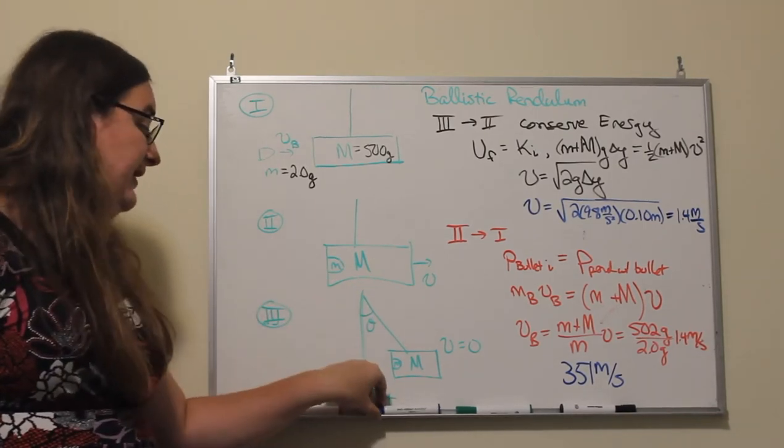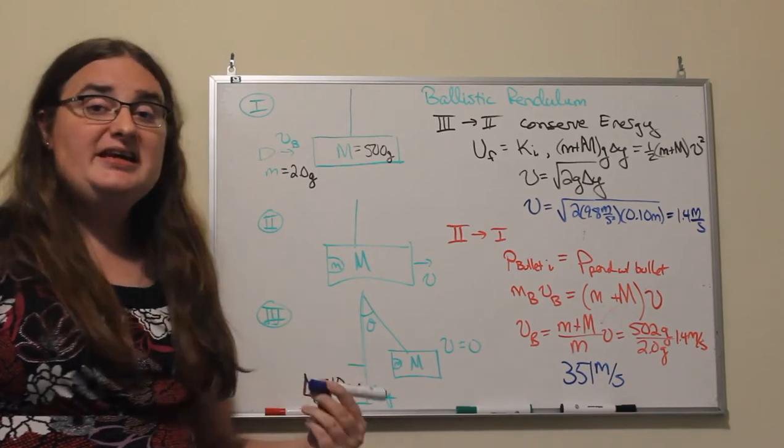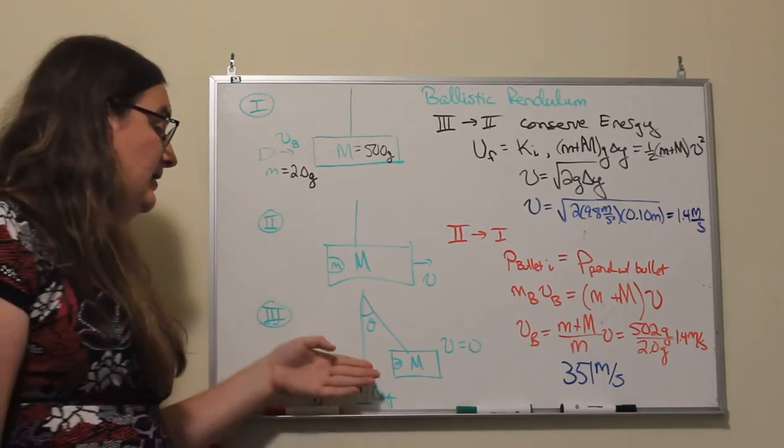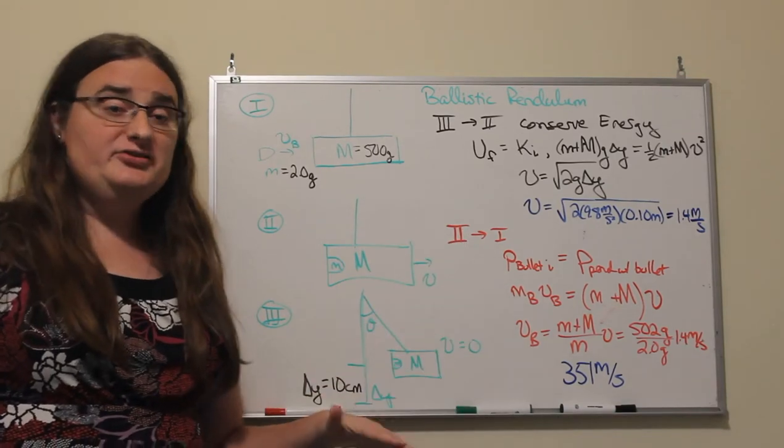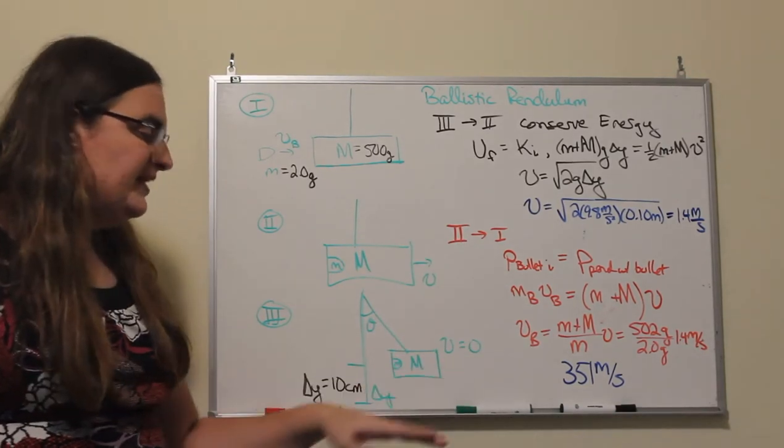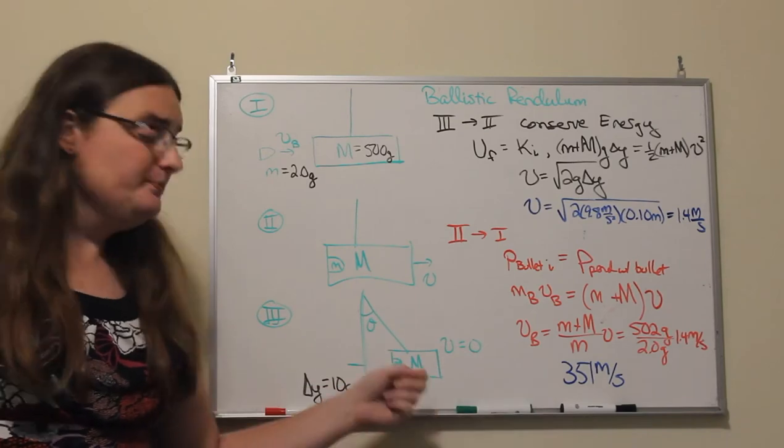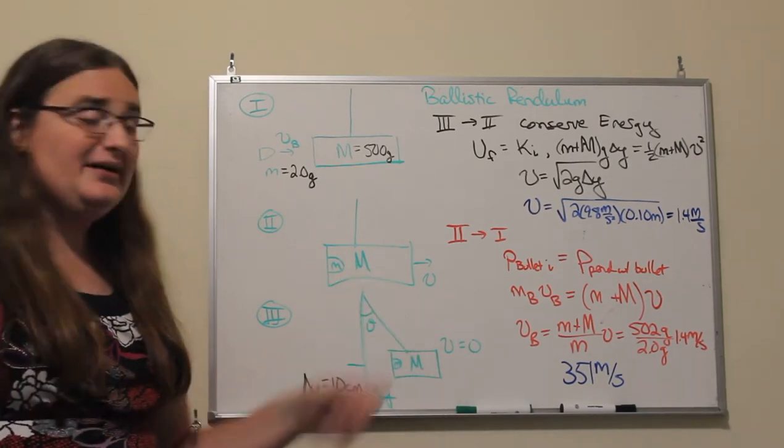So working backwards, we could either be given information on the height by having, say, a calibrated screen in the background and go through with a high-speed camera and look frame by frame and find out how high that object travels.